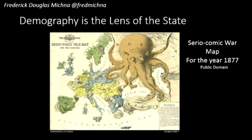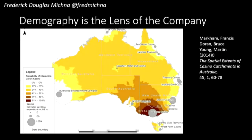One of the ways I'm going to say it is that demography is the way that the state sees its people. This is probably one of the most famous maps, which shows how the state of Great Britain saw Russia in 1877. Another way it could be seen is as a lens that a company uses to see who it is serving and who it's taking money from.